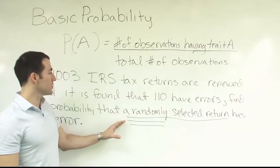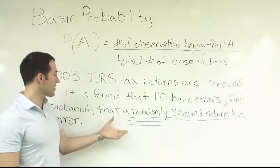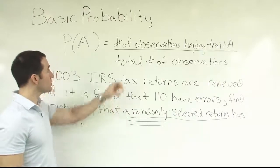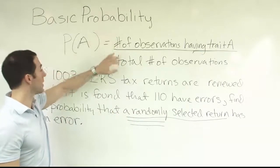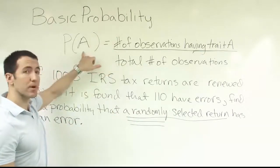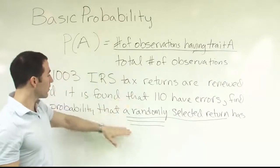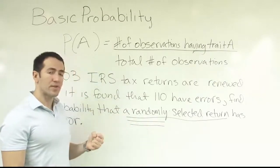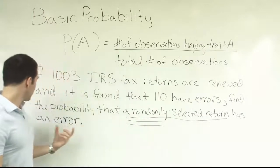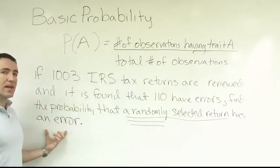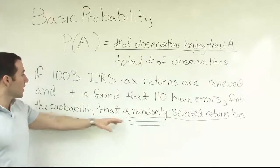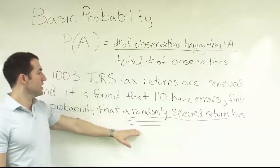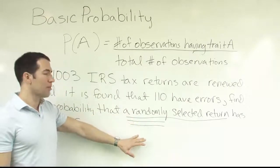For basic probability, we're usually only grabbing one item. In fact, it's always got to be one item if it's basic probability, because we just deal with a single fraction that talks about the single probability of that event. Selecting the return is the one event, and we're looking for that return to be one that has an error. So 'a single thing selected' is going to be a key phrase indicating basic probability.